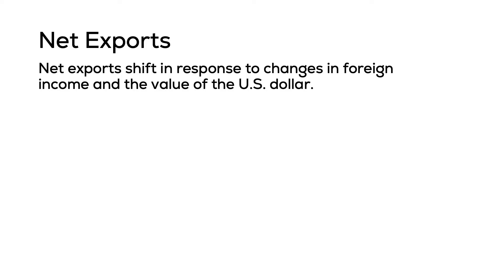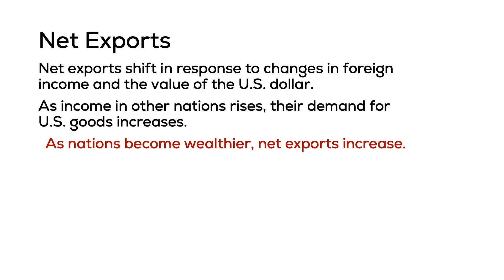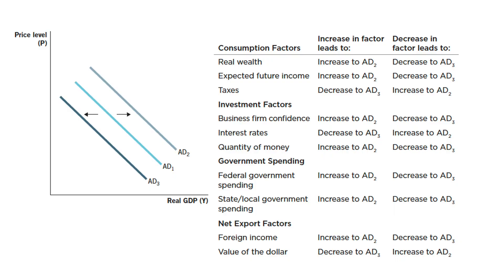When it comes to income, when international economies experience an increase in their income or become wealthier, they're able to buy more American products, and this will cause AD to shift to the right. If other countries experience a decline in their wealth or income, they will be less likely to purchase our products, causing exports to fall and AD to shift to the left.